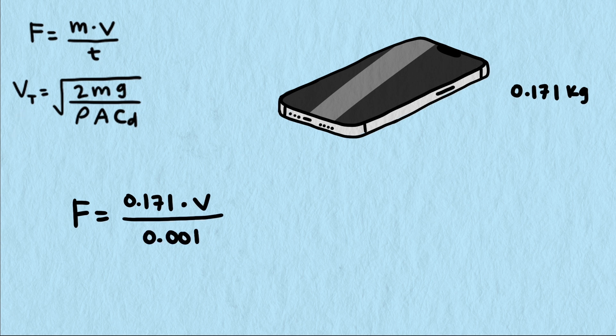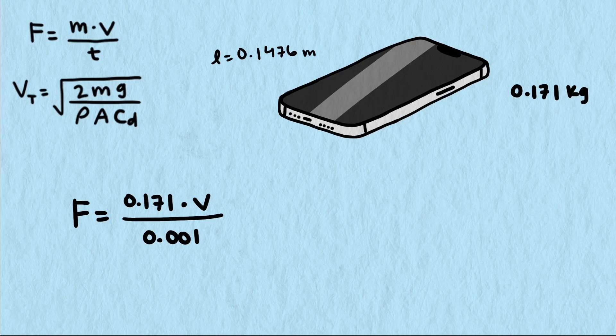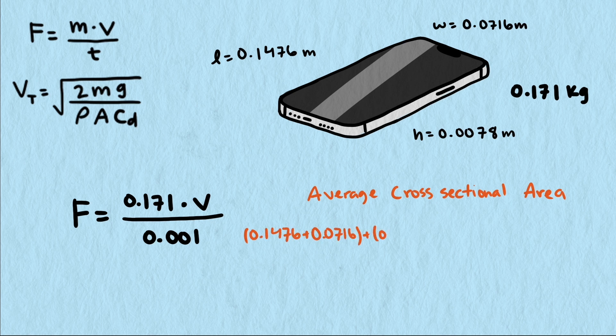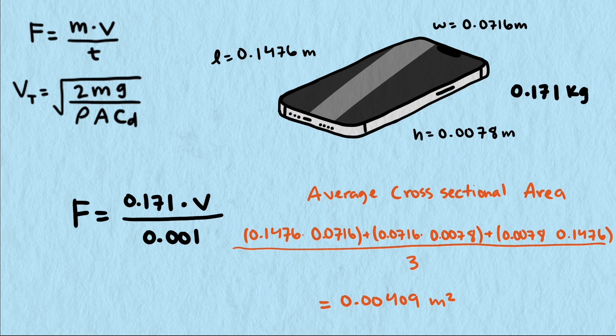Lastly, we'll need to find its terminal velocity. We know mass, gravity, and air density, but we need to find cross-sectional area and drag coefficient. Area will be quick. A phone will likely tumble as it falls because of the large surface area of the face. To estimate the cross-sectional area, let's find the area of the face of the phone and the small edges of the phone and do an average. Given these dimensions from the Apple website, we can quickly calculate that the average cross-sectional area is 0.00409 meters squared.